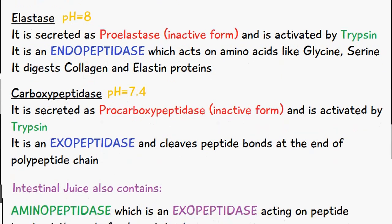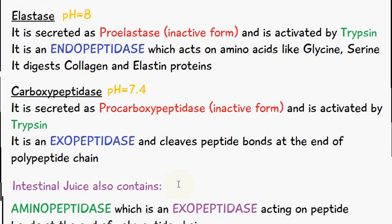We also have carboxypeptidase, which has an optimum pH of action at 7.4. It is secreted as procarboxypeptidase and it's activated again by trypsin. Carboxypeptidase is an exopeptidase, so it cleaves the peptide bonds at the end of the polypeptide chain.